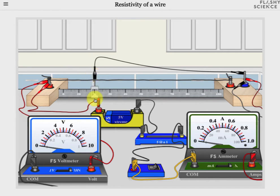At the bottom left of the screen you'll see a voltmeter and on the bottom right an ammeter. There's also an electrical on-off switch, a fixed resistor and a 5 volt battery cell.